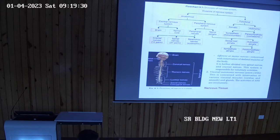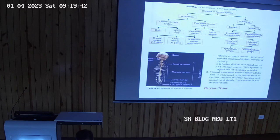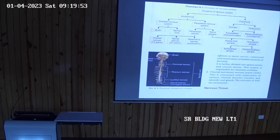So all these are the classification. This classification — always keep in your mind. You should be very clear about what is the ganglia, what are the peripheral nerves, what is the neuron, and what is the neuroglial cells.